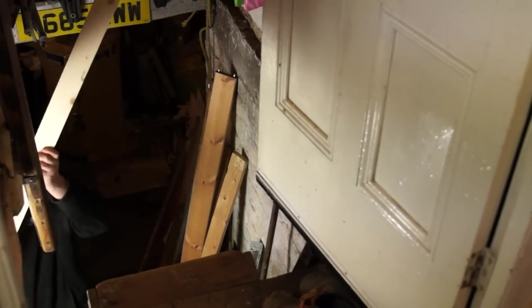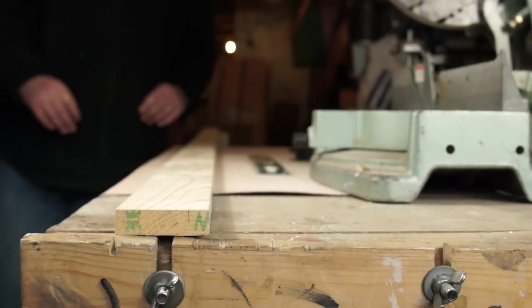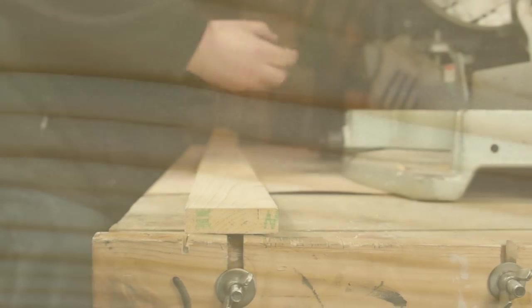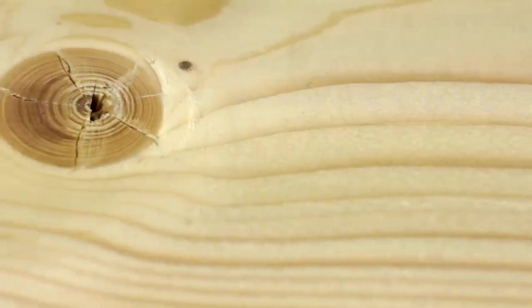For the main body of the dipping machine I'm using a piece of 3B1 planed all round timber. This is soft wood, probably spruce, and while I wouldn't want to make fine furniture from it, for this type of basic construction it should be fine.